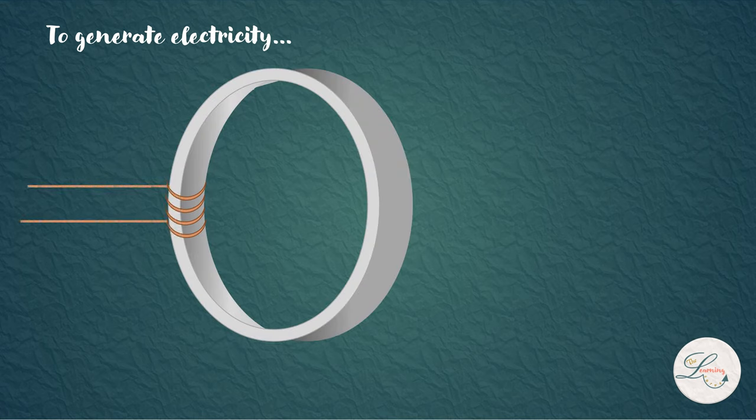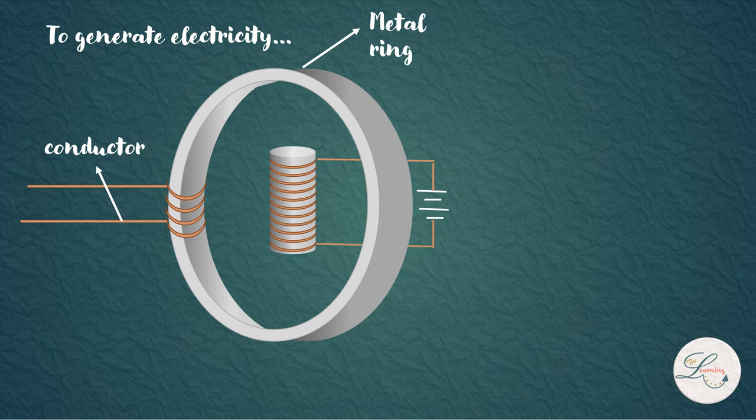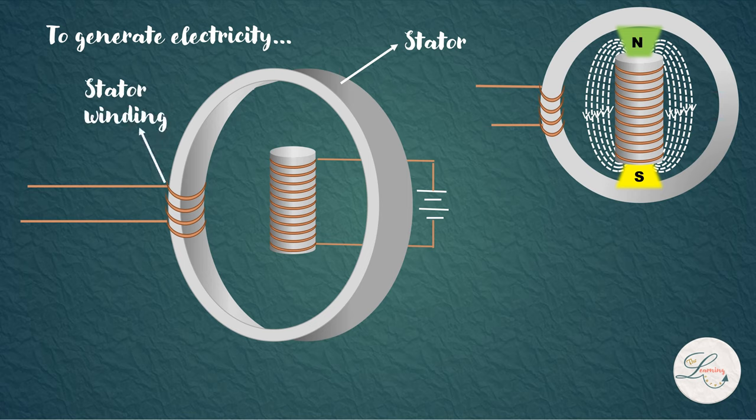First we need a conductor, so we have wrapped it in a metal ring. Then we need a magnetic field. For that we are going to use an electromagnet. A varying magnetic field can be created by rotating this electromagnet. This stationary metal ring is called stator and this conductor is called stator winding. And this rotating electromagnet can be referred to as rotor.